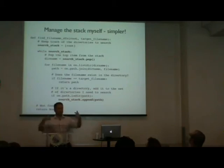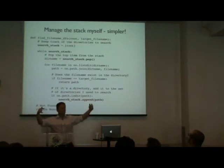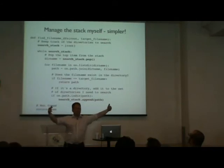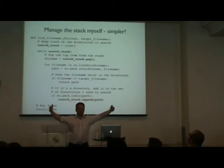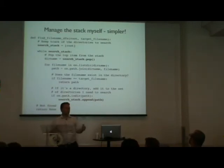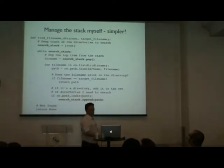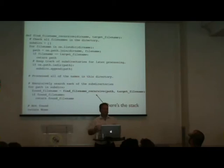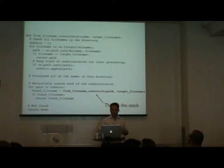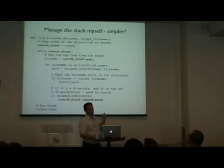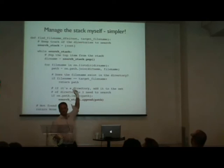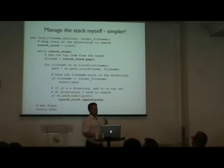What's interesting is that this turned out to be easier to implement by maintaining the stack yourself. Here's the same code without recursive calls — instead it maintains an explicit stack of directories to process. Pull a directory off the stack, search it, find subdirectories, push them back onto the stack. This version is actually simpler because the return logic becomes a straightforward return None rather than threading return values through recursion.